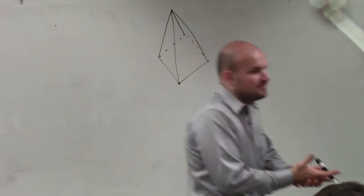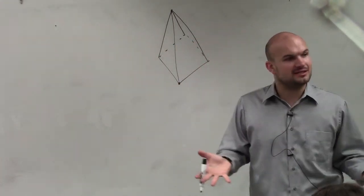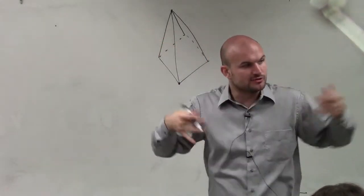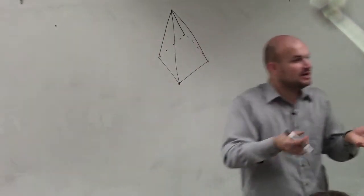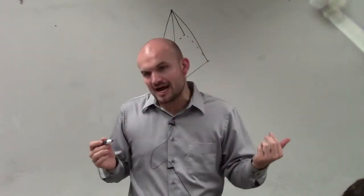And remember, the basic definition of a prism is you have a base and a top that are exactly the same, and what it does is just takes the base and you're elongating it through. So to find the surface area, you find the base and you multiply that by two, and then you find the areas of all the sides.